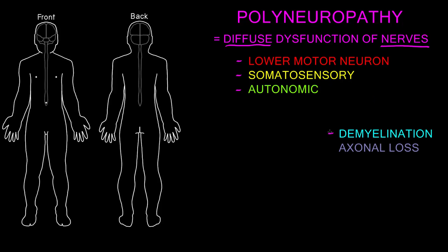The terms are demyelination or axonal loss, and a polyneuropathy can be mainly one, mainly the other, or a mix of both. If we say a polyneuropathy is mainly axonal or involving axonal loss, we mean the actual axons of the peripheral nerves are being injured. Whereas if we describe a polyneuropathy as primarily demyelinating or causing demyelination, then what we mean is that the myelin is the main thing being affected.